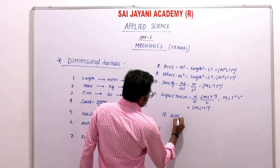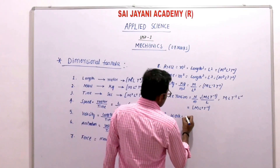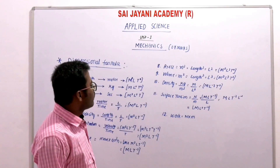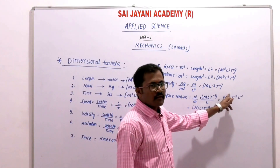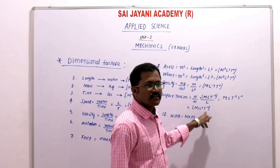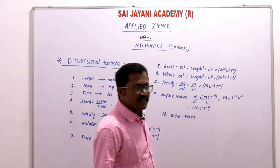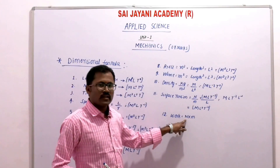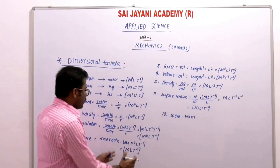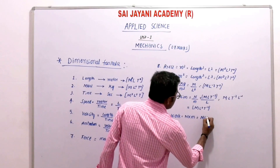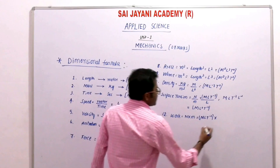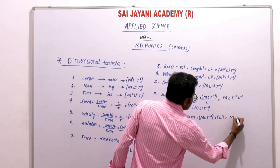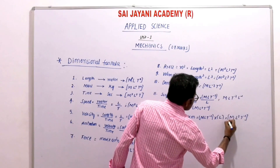Next is work. Work is the product of force and distance. The SI unit of force is newton, and force has dimensional formula M L T⁻². Distance is a length L. So force times distance gives M L T⁻² multiplied by L, meaning L to the power 1 plus 1 equals L². Therefore the dimensional formula for work is M L² T⁻².